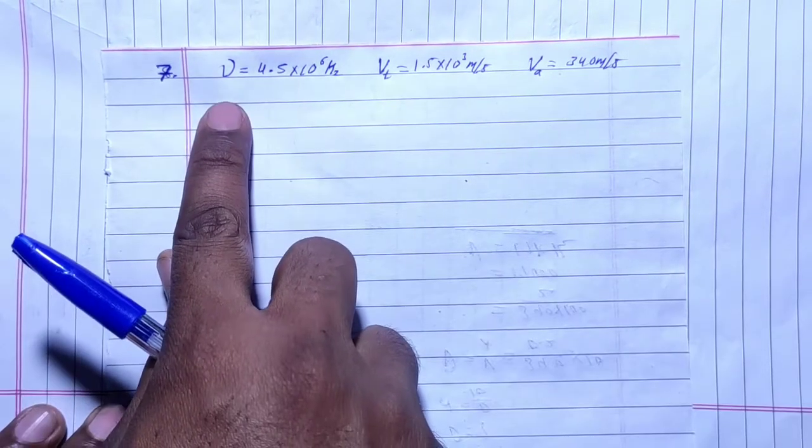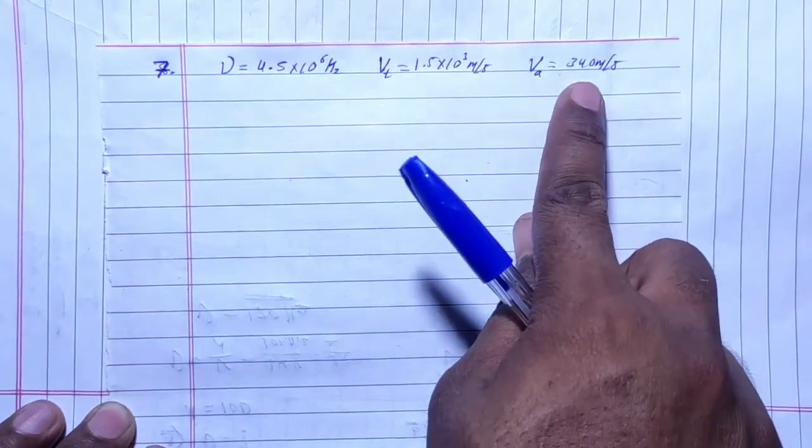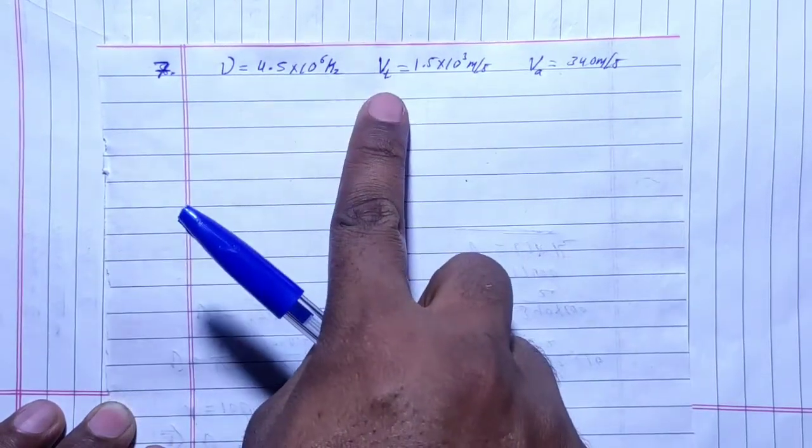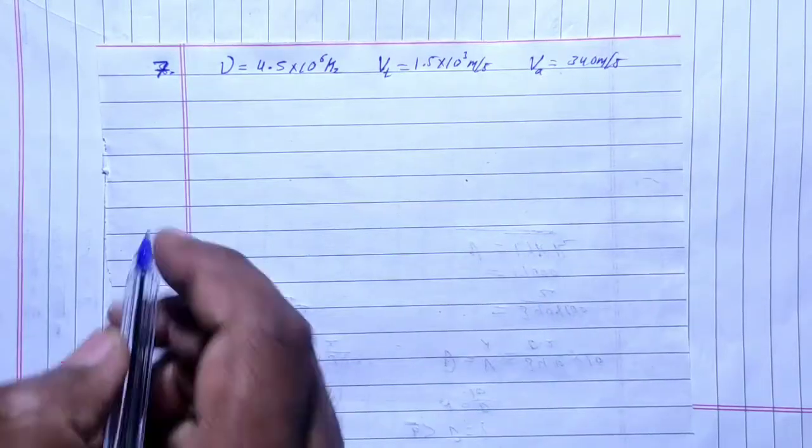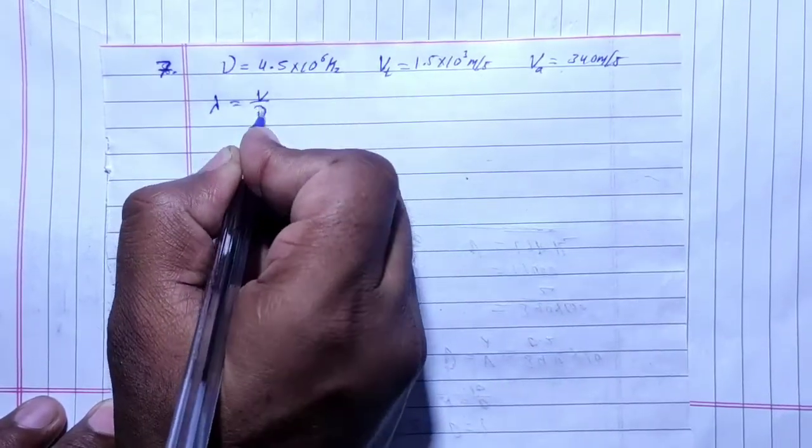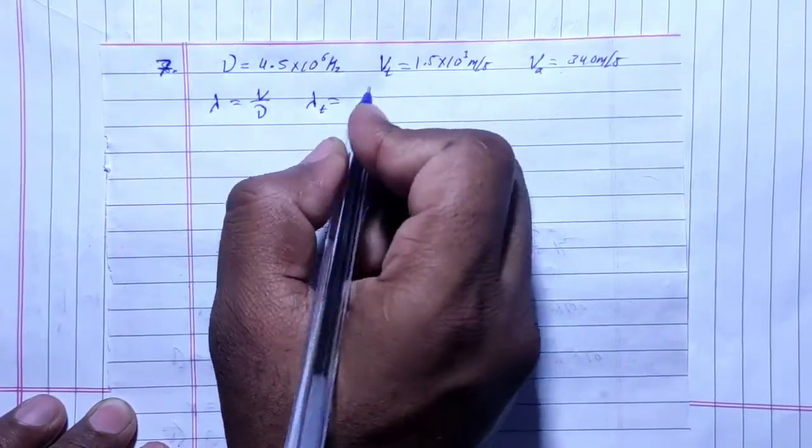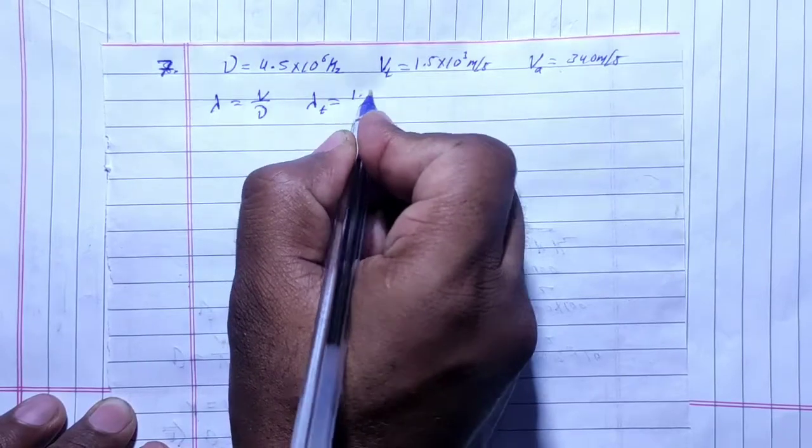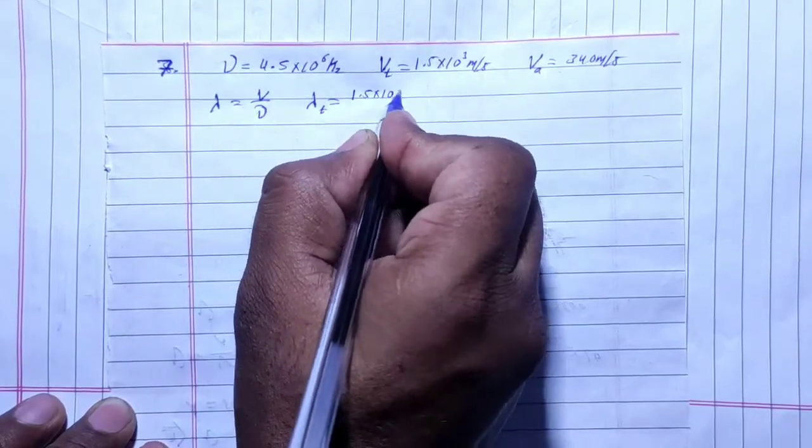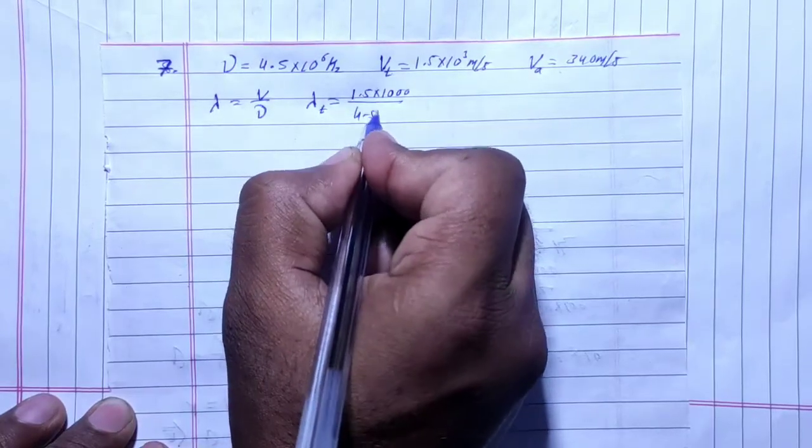Given: frequency of ultrasonic sound, velocity in tissue, and velocity in air. We need to find wavelength in tissue and air. Wavelength equals speed divided by frequency. For tissue wavelength λ_t, speed is 1.5 × 10³ m/s divided by frequency 4.5 × 10⁶ Hz.